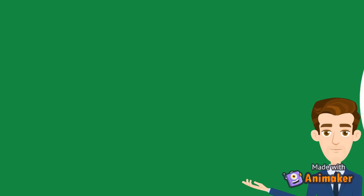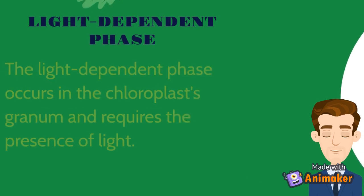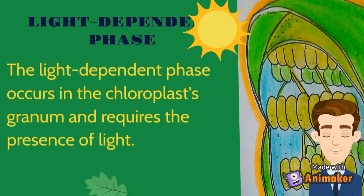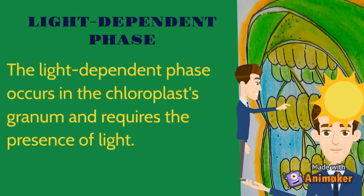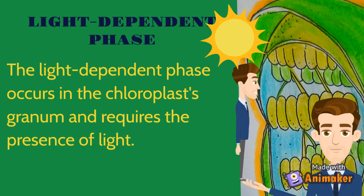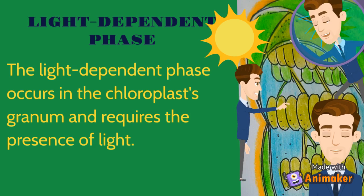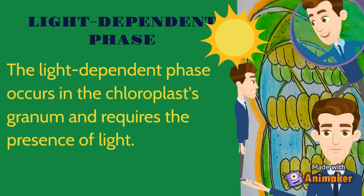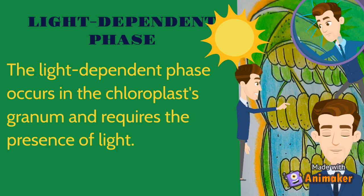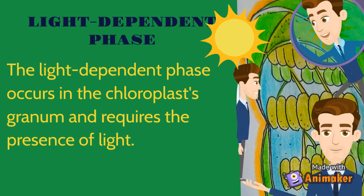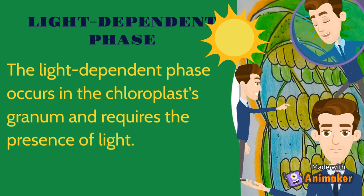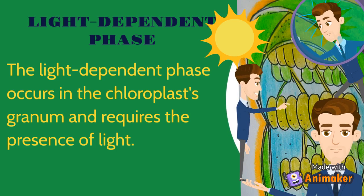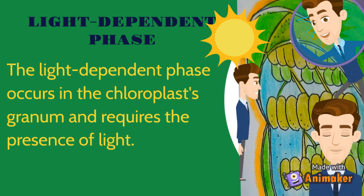The light-dependent phase of photosynthesis occurs in the chloroplast's granum and requires the presence of light. The process continues in a complex protein system inside the granum, which is collectively known as a photosystem. There are two photosystems known as PS1 and PS2. The two photosystems absorb light energy through proteins containing pigments, such as chlorophyll.